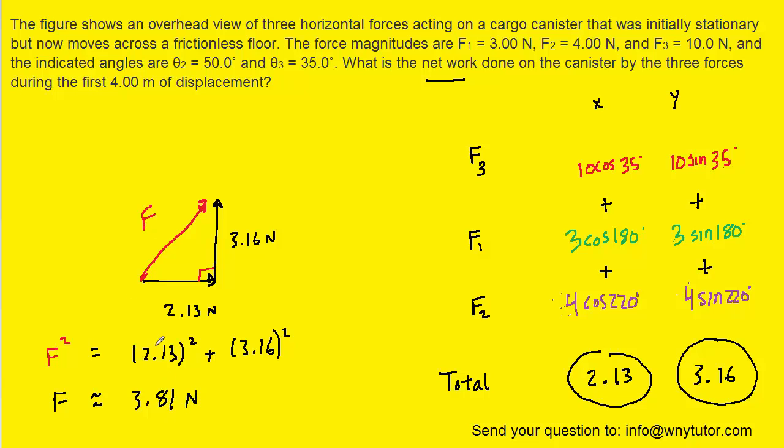Now we can finally go back and calculate the work because work, we had determined earlier, was equal to the magnitude of the net force times the magnitude of the displacement. And so we would take our net force of 3.81 Newtons multiplied by the magnitude of the displacement, which is 4 meters. And when we compute that, we get approximately 15.3.